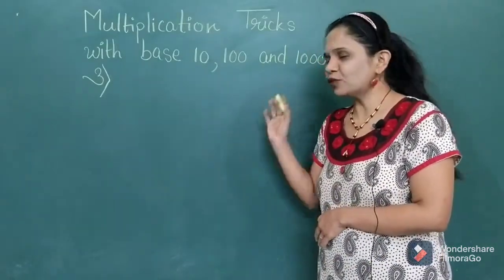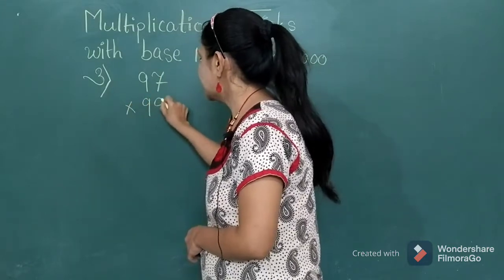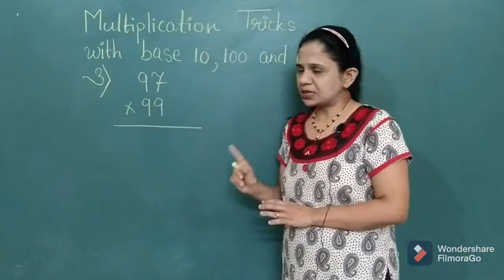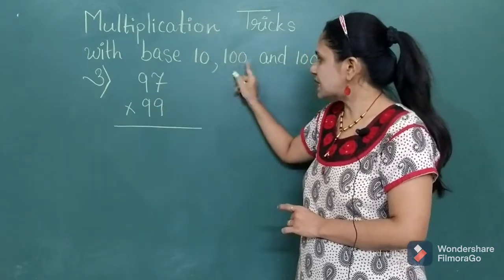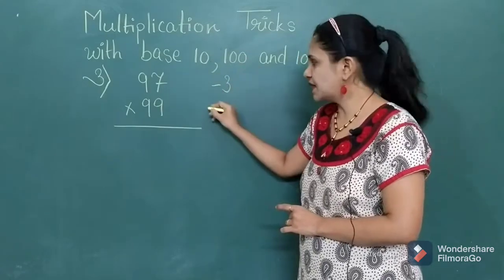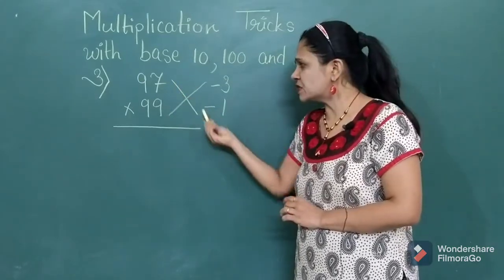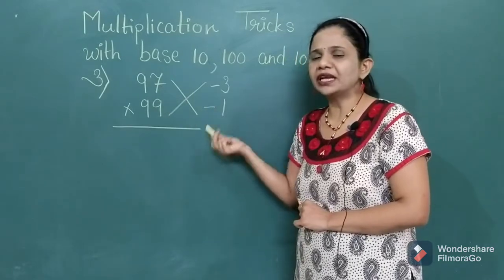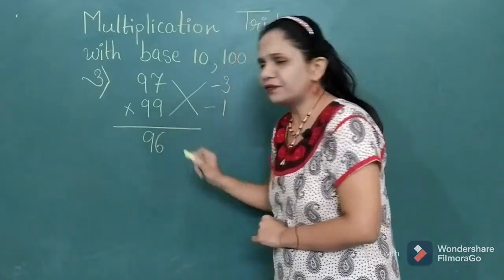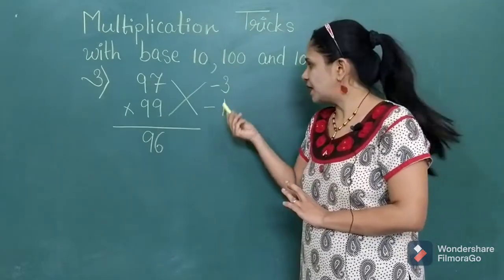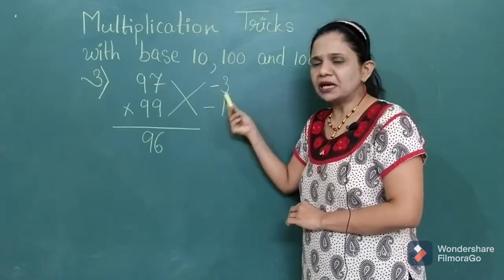Let's take one more example of a 2-digit number of a different type. Suppose you want to multiply 97 by 99. The first step is the same — find the base number, which is 100. Now 97 is less than 100 by 3 and 99 is less than 100 by 1. Draw the cross and do the subtraction of the crisscross numbers. 97 minus 1 gives 96. 99 minus 3 again gives 96. Write that common number down first. Then multiply the newly written numbers: minus 3 multiplied by minus 1. Minus times minus gets plus, so 3 ones are 3.